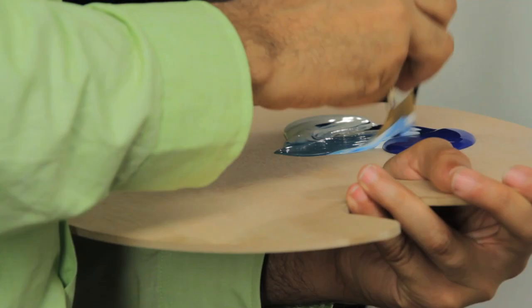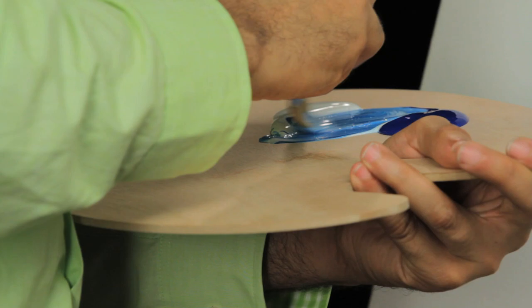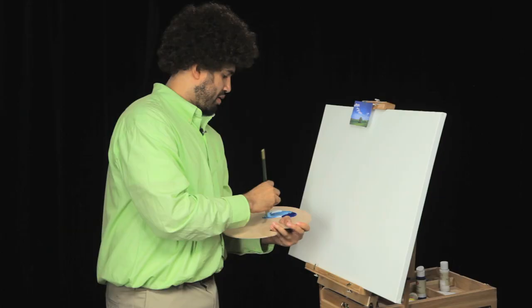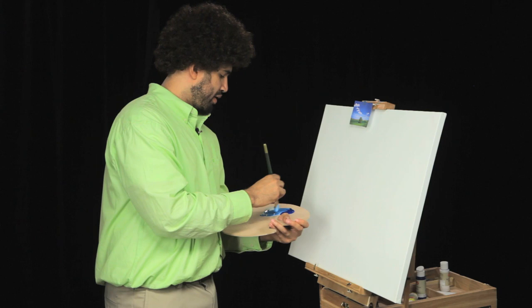Now, I'll just mix my colors here. We're going to start with the sky. There we go. That looks sky enough for me. Let's start the painting.